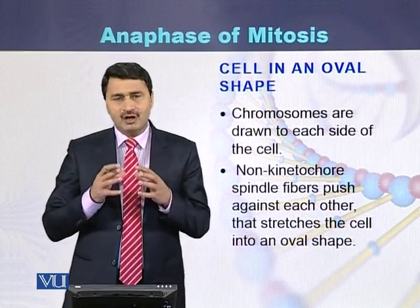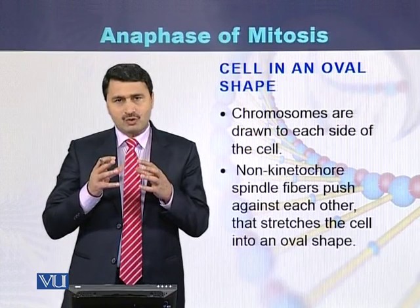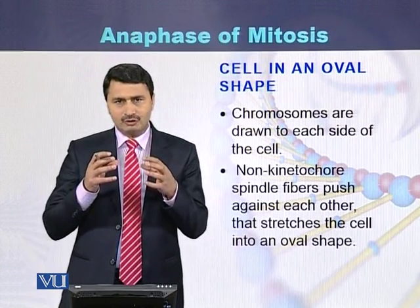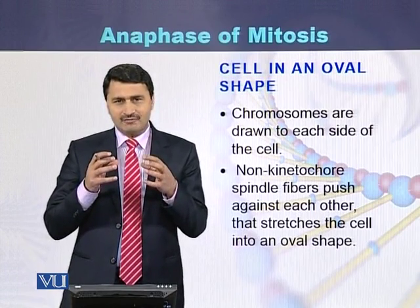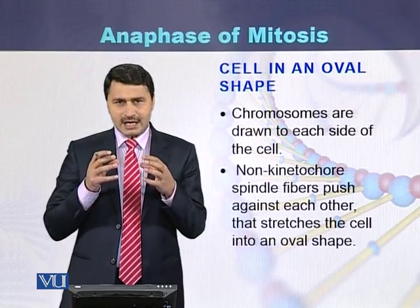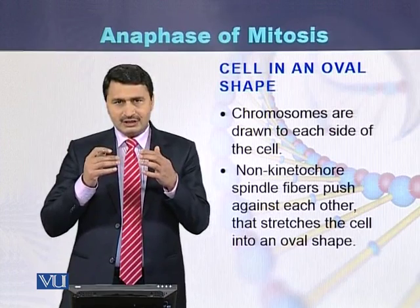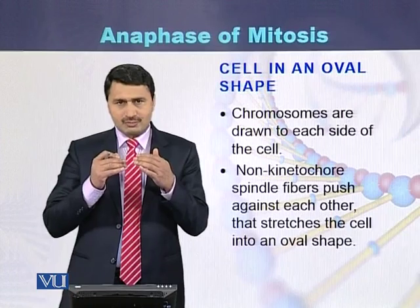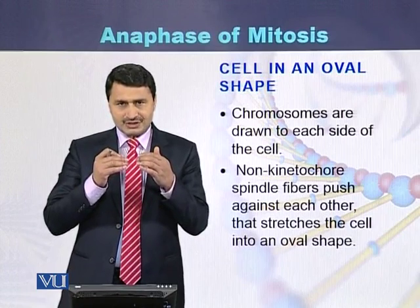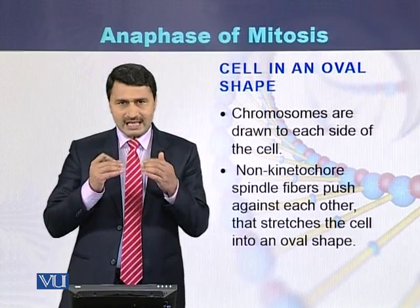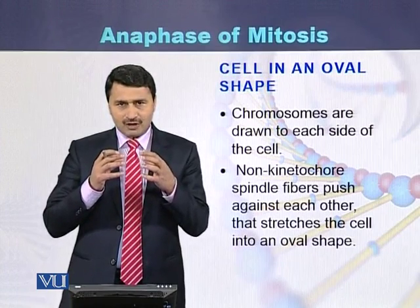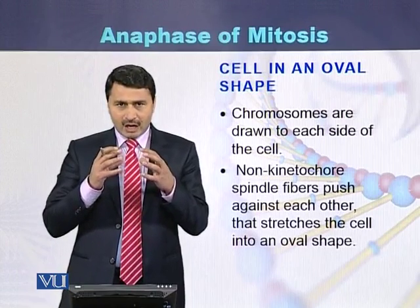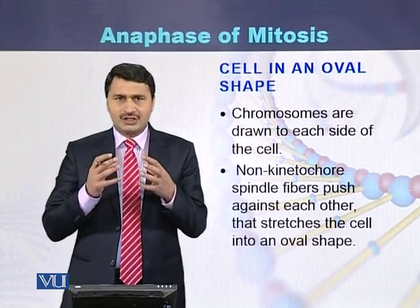The cell is in an oval shape. Once the chromosomes arrive at the poles, those spindle fibers which are not attached to the kinetochores push against each other. This pushing causes a stretch on the size of the cell, and the cell converts from a round shape into an oval shape.